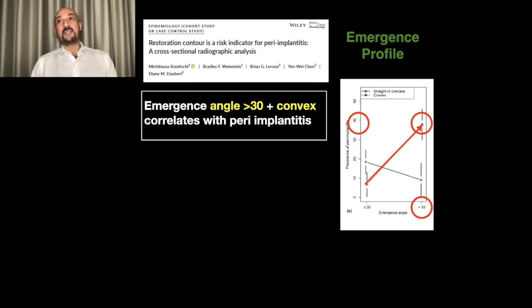This is a significant difference because the supracrestal complex starts from the bone crest. With tissue level implants, the first couple millimeters of our supracrestal complex and emergence profile are predetermined by the tissue collar of the implant.